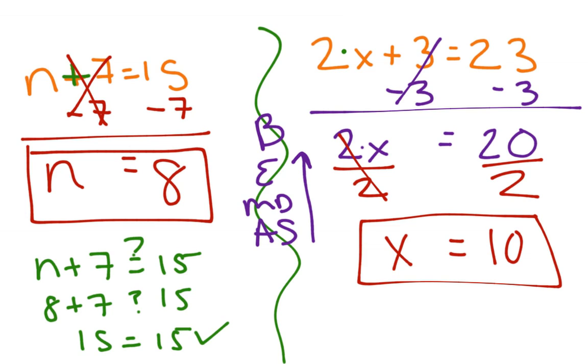If we plug it back in to check, 2x plus 3, we want to know if that equals 23. So 2 times 10 plus 3. Using our order of operations, we would multiply first. We get 20 plus 3, which does equal 23. So we know we have our correct solution.